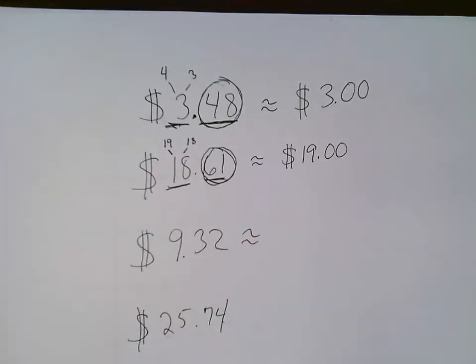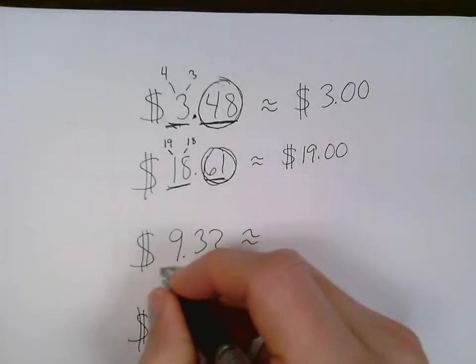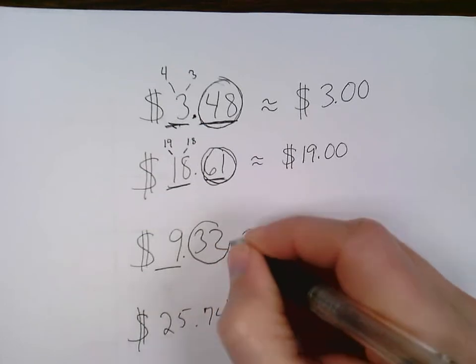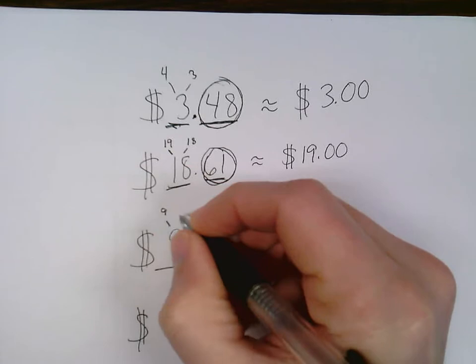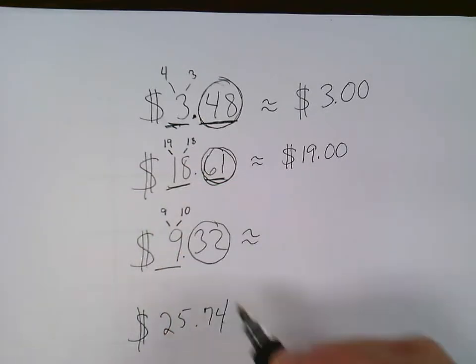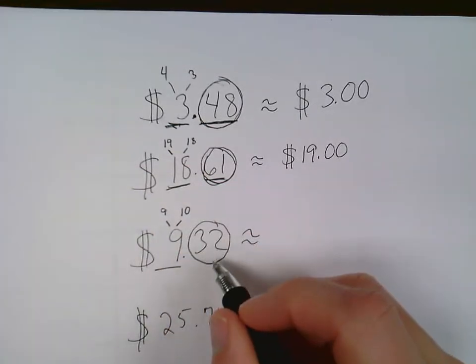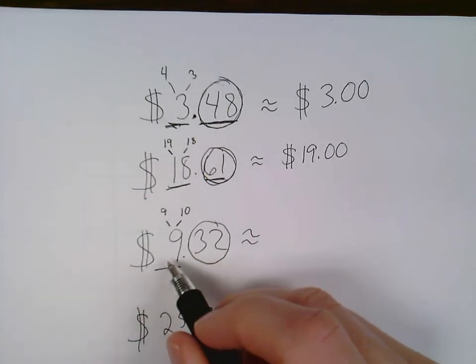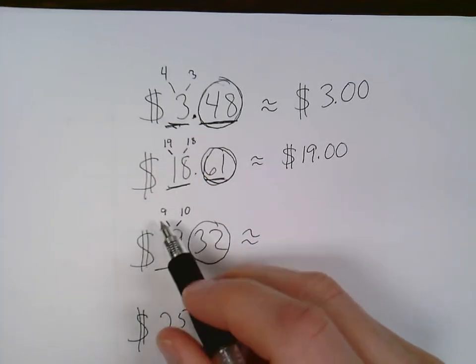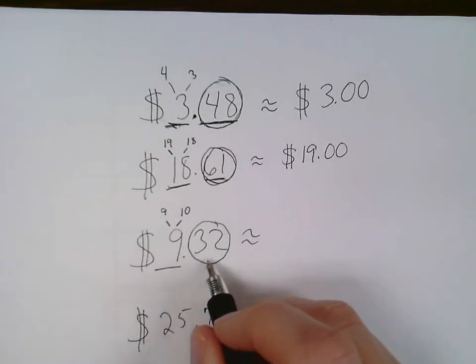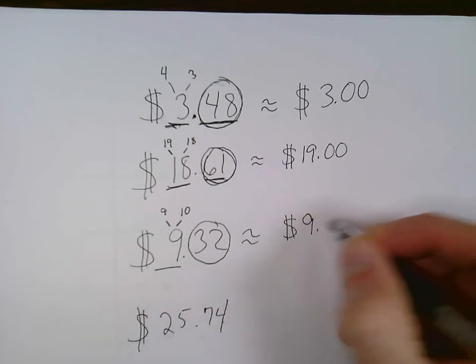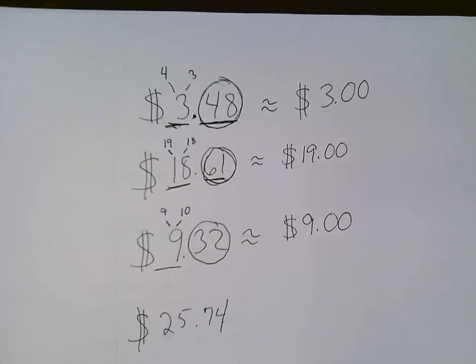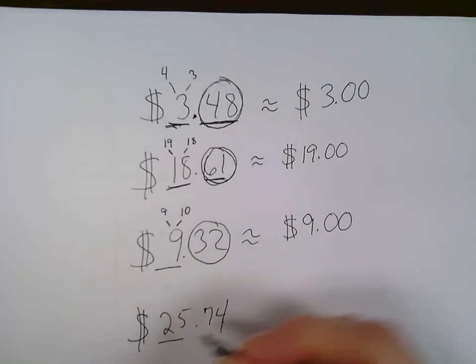And next one here, $9.32, underline the dollars, circle the change. The nine will either stay a nine or go up to a 10. And the circled portion of this will tell the underlined dollar amount if it's staying the same or going up. If the circled portion is less than 50 cents, it stays the same. So that nine is going to stay a nine. Now our underlined digits never ever go down. It will either stay exactly the same or go up by one.